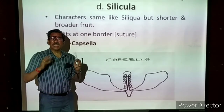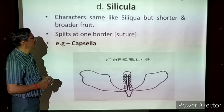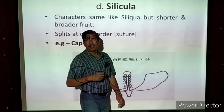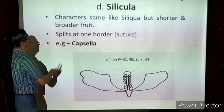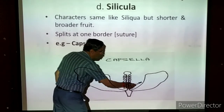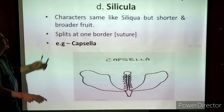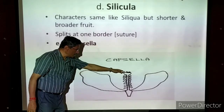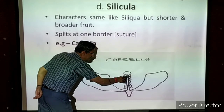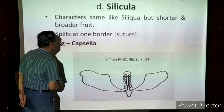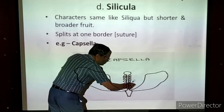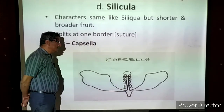Now silicula — siliqua and silicula are different, with a very mild difference. The characters are the same as siliqua but the silicula fruit is shorter and broader. It is a very short, broad fruit — whereas siliqua is very long. The two pericarp halves split; the height of the fruit is very short but broad. Characters are the same as siliqua, but the fruit is shorter and broader. It splits at one border only. The same way the replum will be there, with seeds attached. After thorough drying, all the seeds fall off one after another.